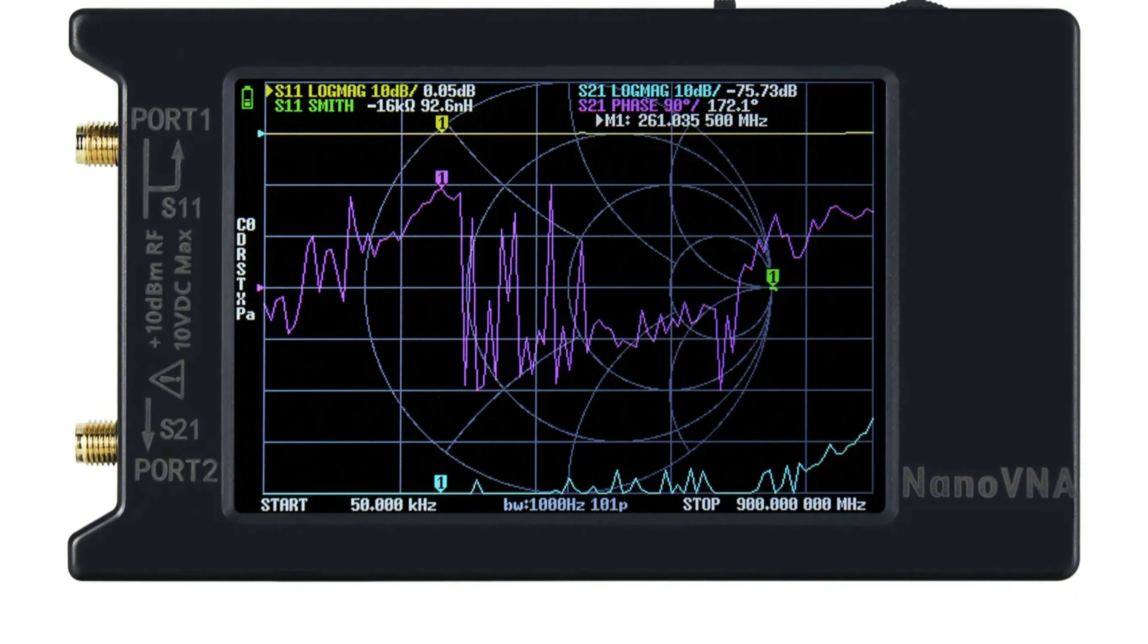The RF output is 0 dBm, ensuring consistent and accurate signals. The device has a low port SWR of 1.1, minimizing signal reflection and improving measurement accuracy.